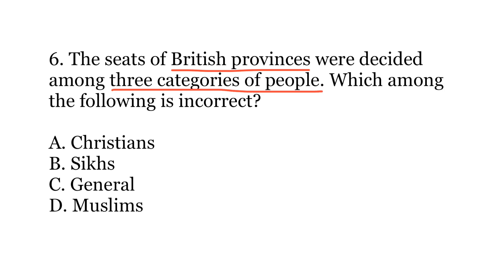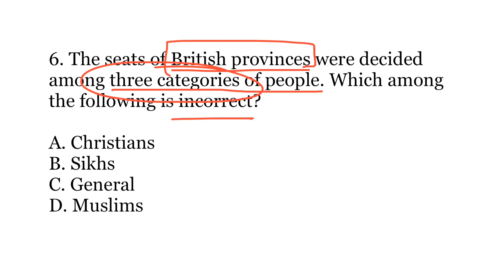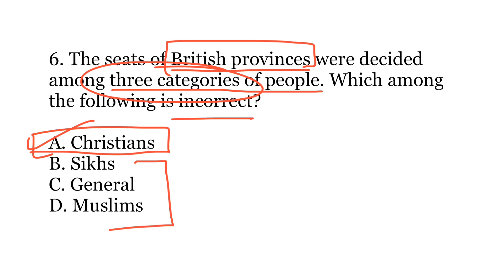The sixth question: the seats of British provinces were decided among three categories of people. Which among the following is incorrect, i.e., not one of those three categories? The indirect elections were held in the legislative assemblies of those provinces, and the electorate was divided among three categories. Options: A — Christians; B — Sikhs; C — General; or D — Muslims. The correct answer is A — Christians. There was no separate representation provided to Christians. The three categories were Sikhs, General, and Muslims. In the General category there were Hindus as well as lower caste people.